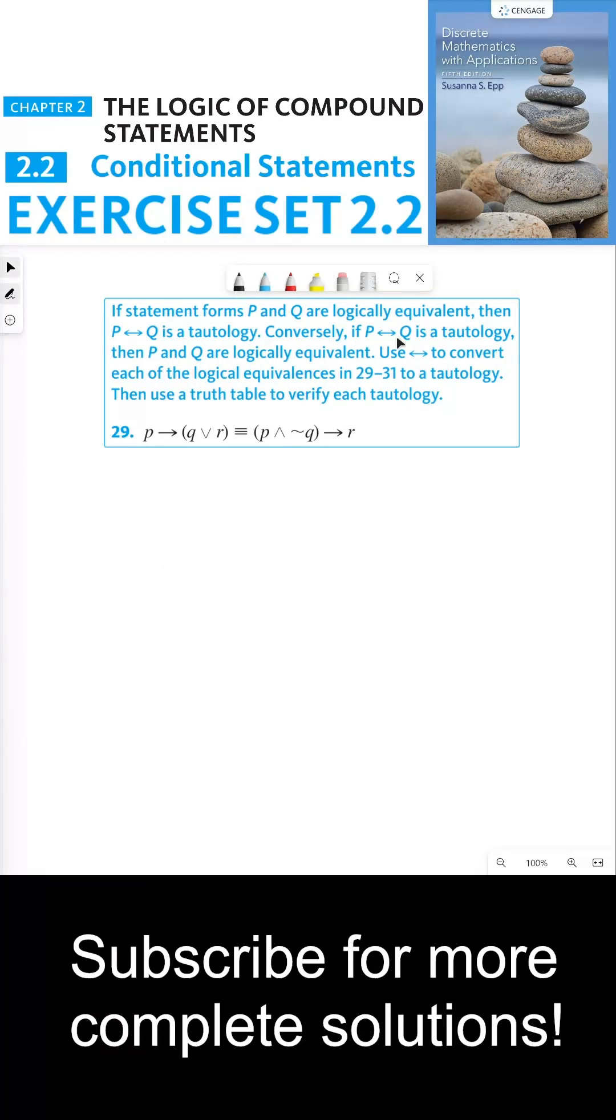If statement forms P and Q are logically equivalent, then P biconditional Q is a tautology. Conversely, if P biconditional Q is a tautology, then P and Q are logically equivalent.